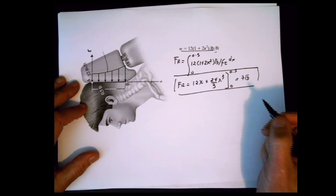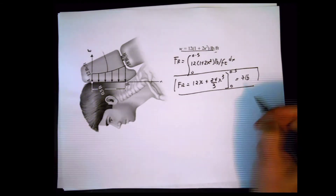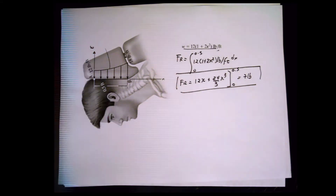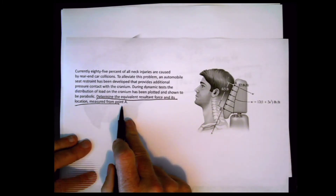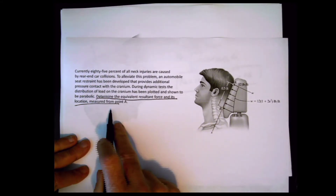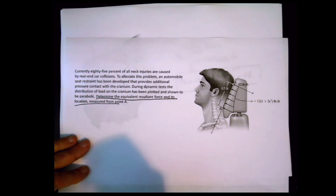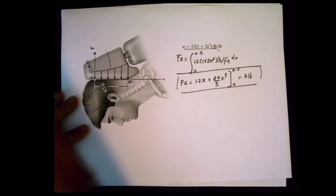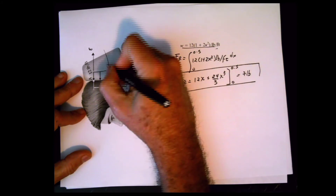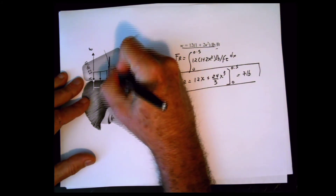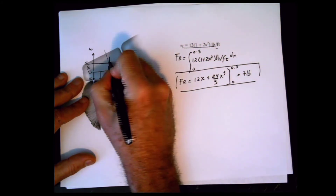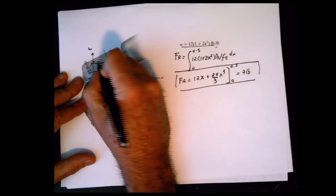The second question asks to find the location of the equivalent resultant force. Let me re-read it: determine the equivalent resultant force and its location measured from point O. So if I want to know the location of that force, I need to find a moment that produces the same effect. We need a resultant force placed at a certain location — I'll call that location d.